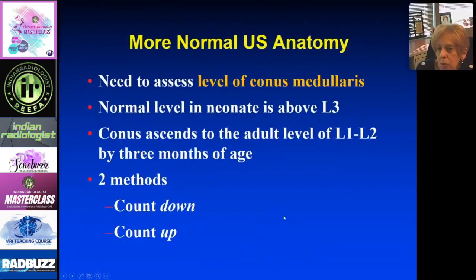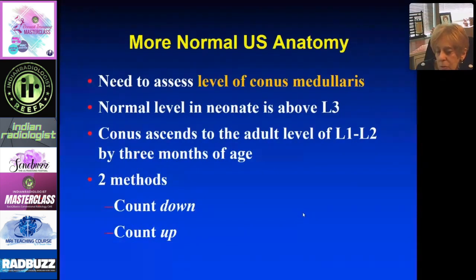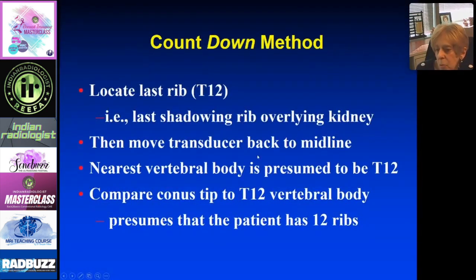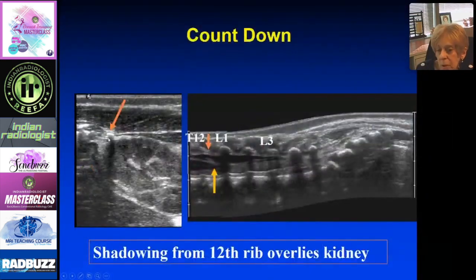You need to determine where the level of the conus is, because normally it should be above L3 and ascends to the adult level of L1-L2 by three months of age. There are two ways to do it: count down or count up. To count down, you find the last rib — the last shadowing structure overlying the kidney — move the transducer to the midline, presume that is T12 if the patient has 12 ribs, and count down. So here is the last rib casting a shadow over the kidney, and from there we count down to determine that the conus is at L1.